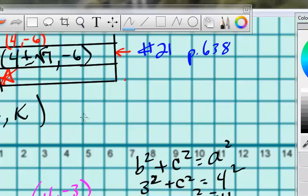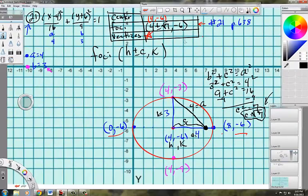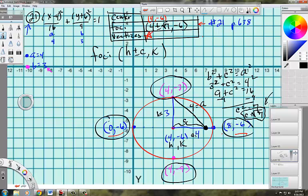That is the equation or the coordinates of the foci. The vertices, this, this, this, and this would all go right here, okay, in that blank. And that's basically number 21. See you later.